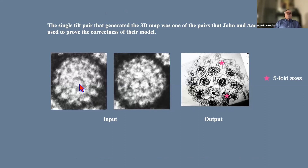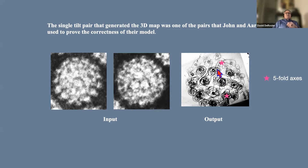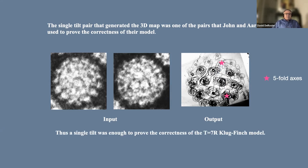Remembering that single tilt pair with the eye and the threefold axis — that pair generated this map. This answers the question of how many tilts you need to prove the model John and Aaron had produced: the answer is one tilt pair. Here is the three-dimensional reconstruction of that virus, confirming it was T=7 (l=1, right-handed). A single tilt was enough to prove the correctness of the structure.